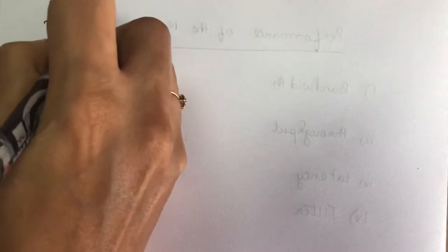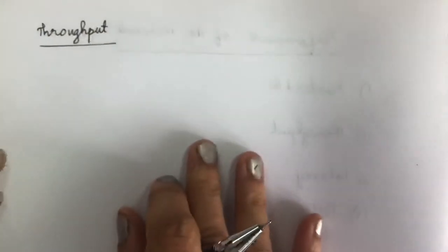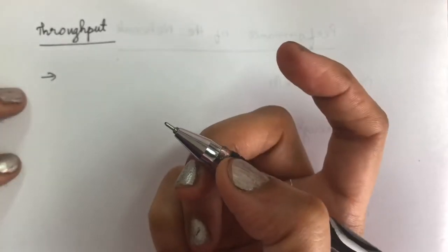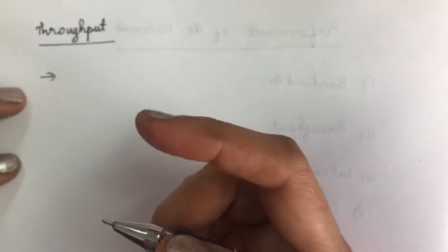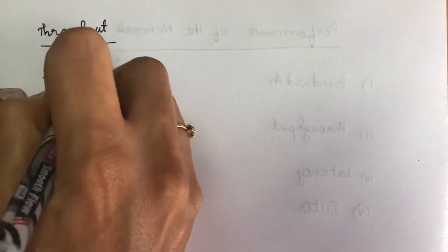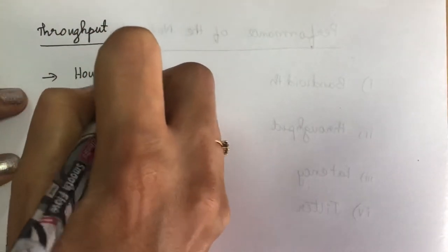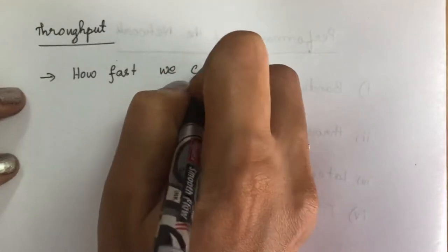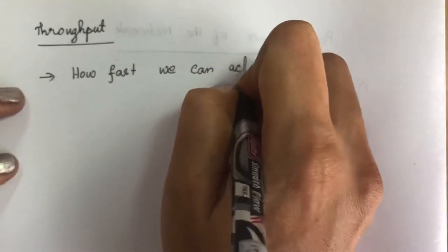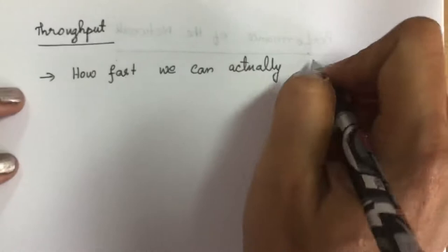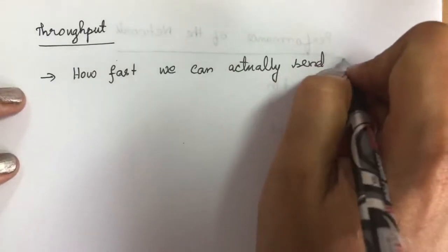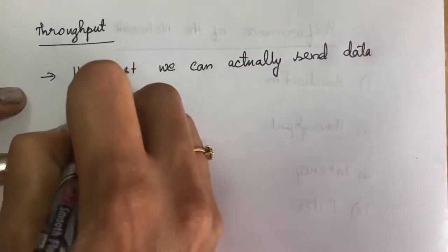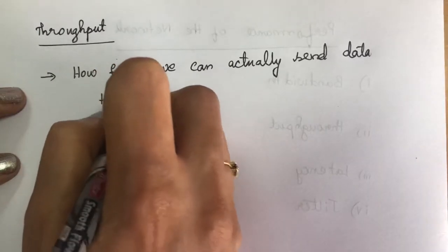Now we will see the second characteristic, called throughput. Throughput is the measure of how fast we can actually send data through the network.